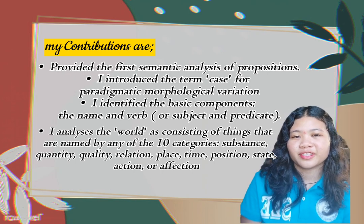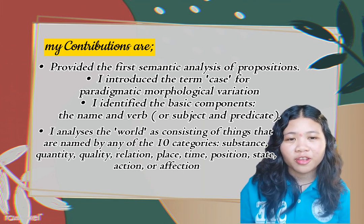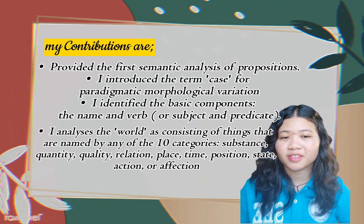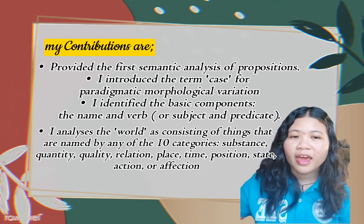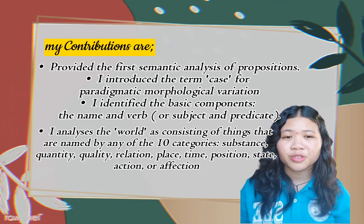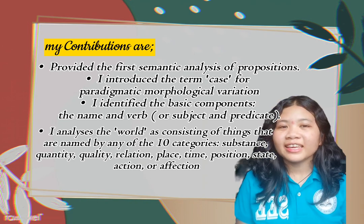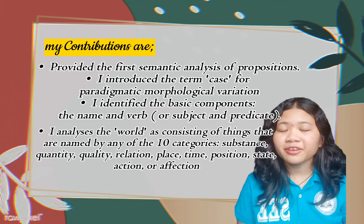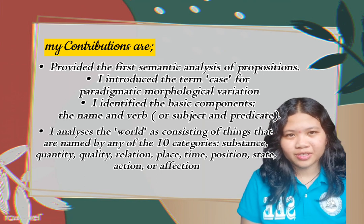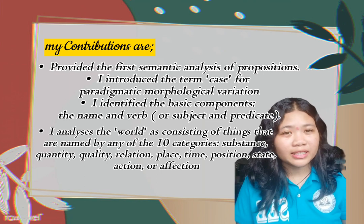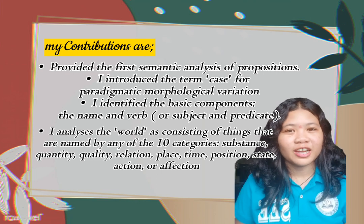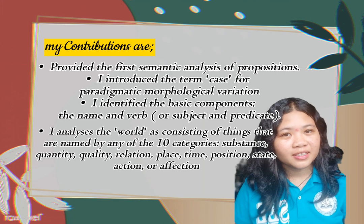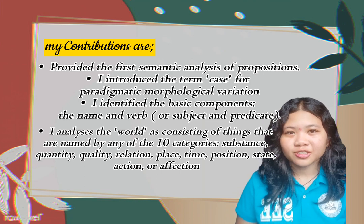He introduced the term 'case' for paradigmatic morphological evaluation. He identified the basic components of sentences — the name and verb, or subject and predicate. He analyzed the world as consisting of things that are named by any of the ten categories: substance, quantity, quality, relation, place, time, state, position, action, or affection.